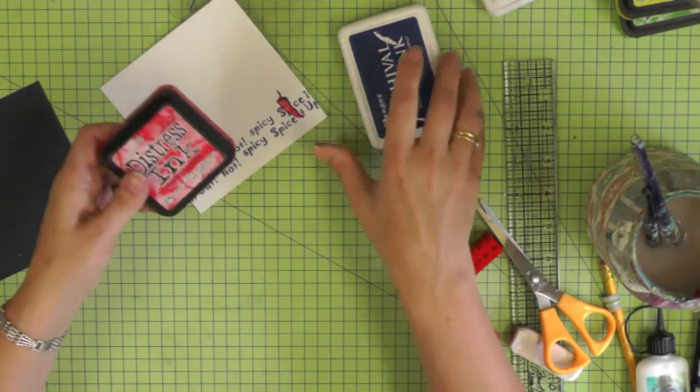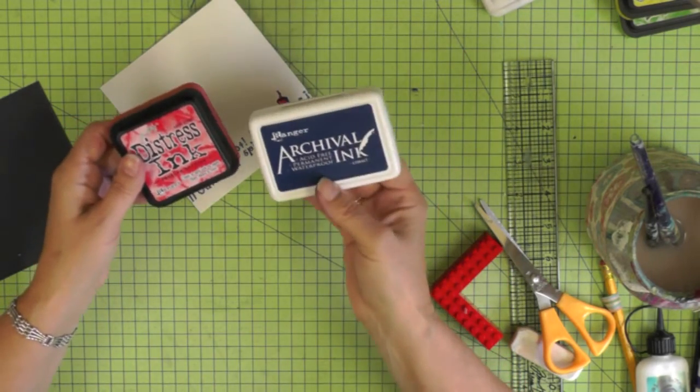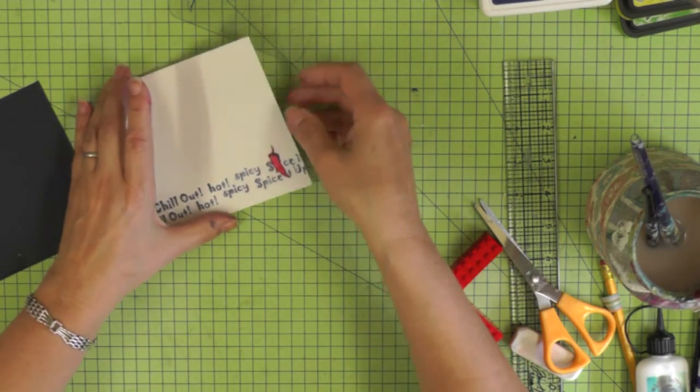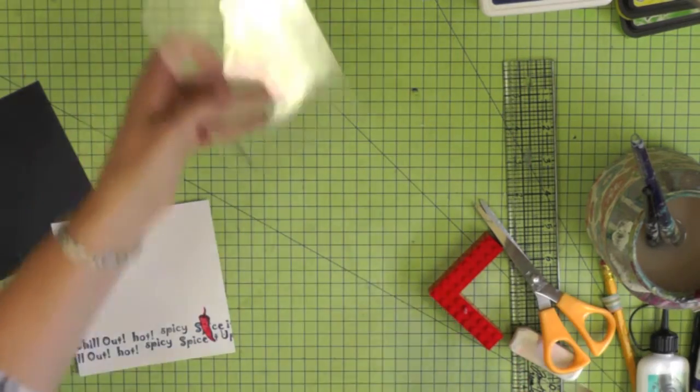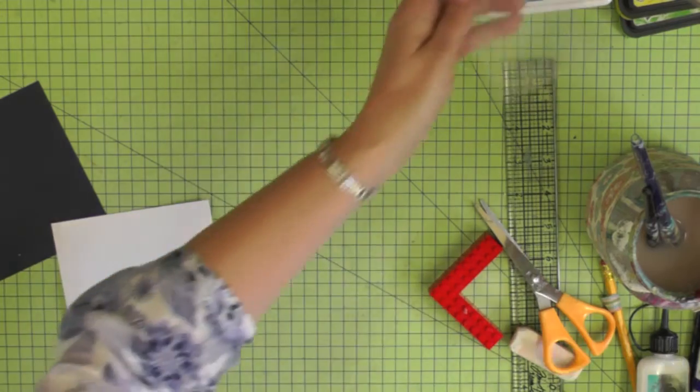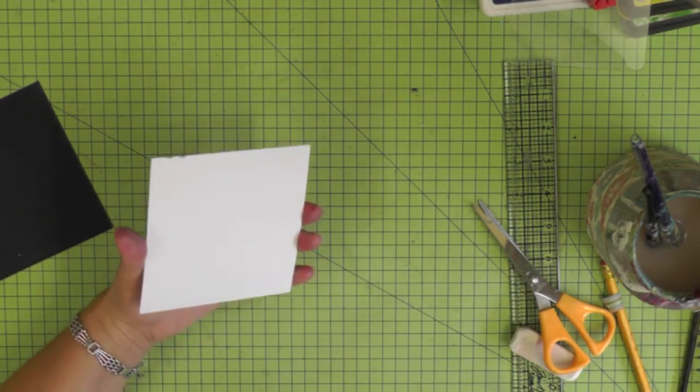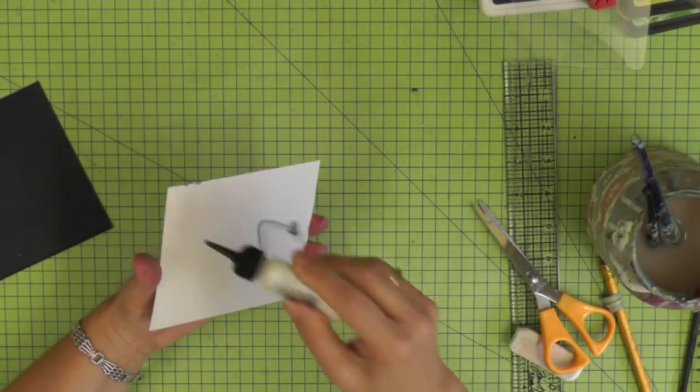Only two inks used in this card. The colored ink was Festive Berries Distress Ink. It would equally be a yellow, an orange or a green and the archival ink was Cobalt and you could use a black and change the blue frame for a black if you wanted to. Now I'm ready to attach this panel to the center of my card. Again you can use double-sided tape if you want to.